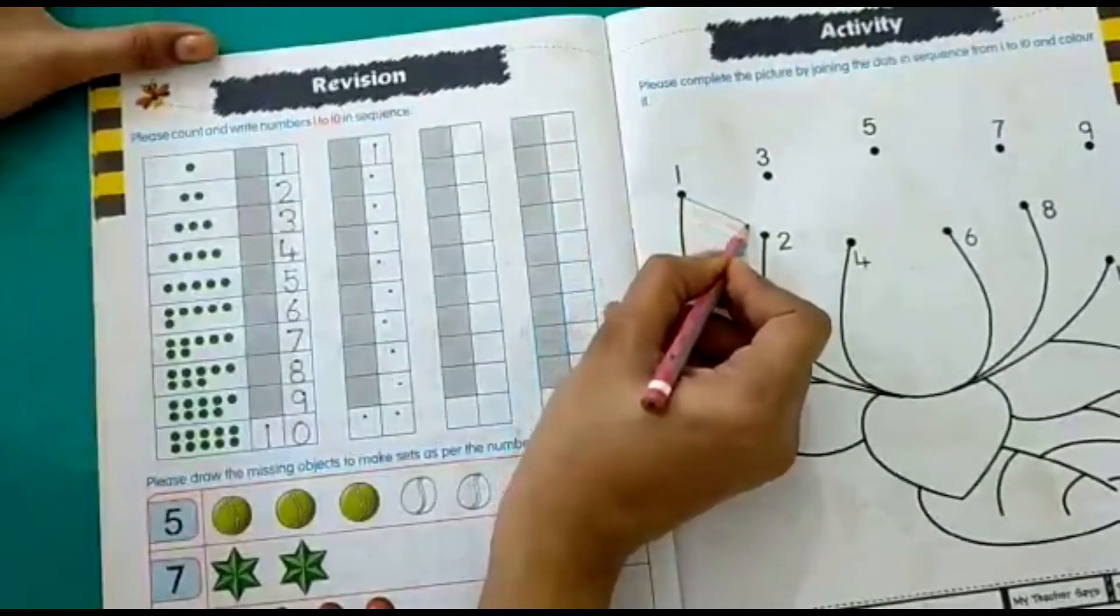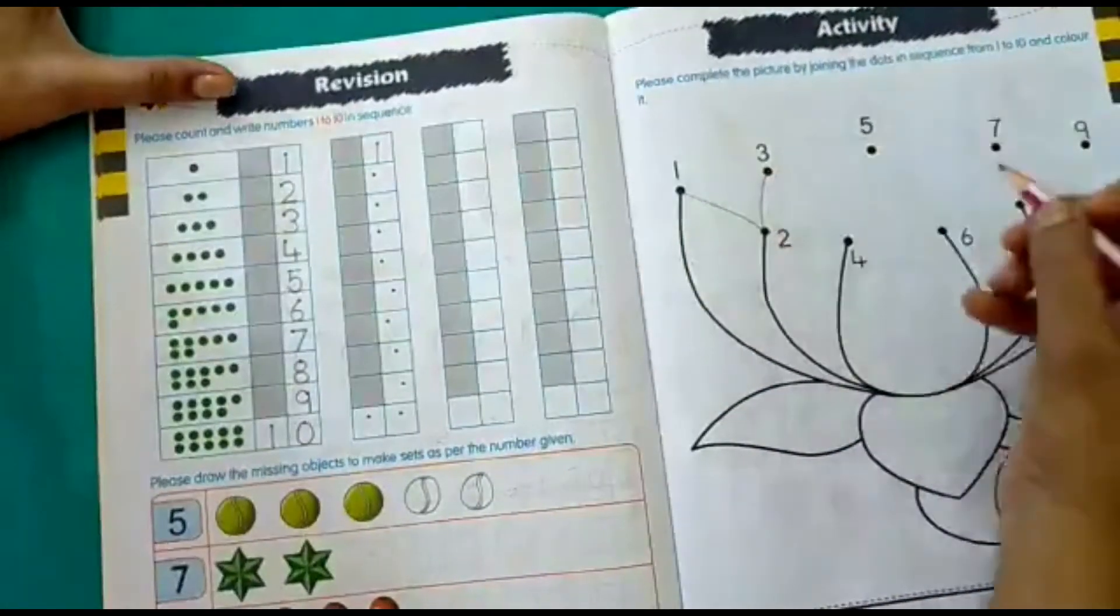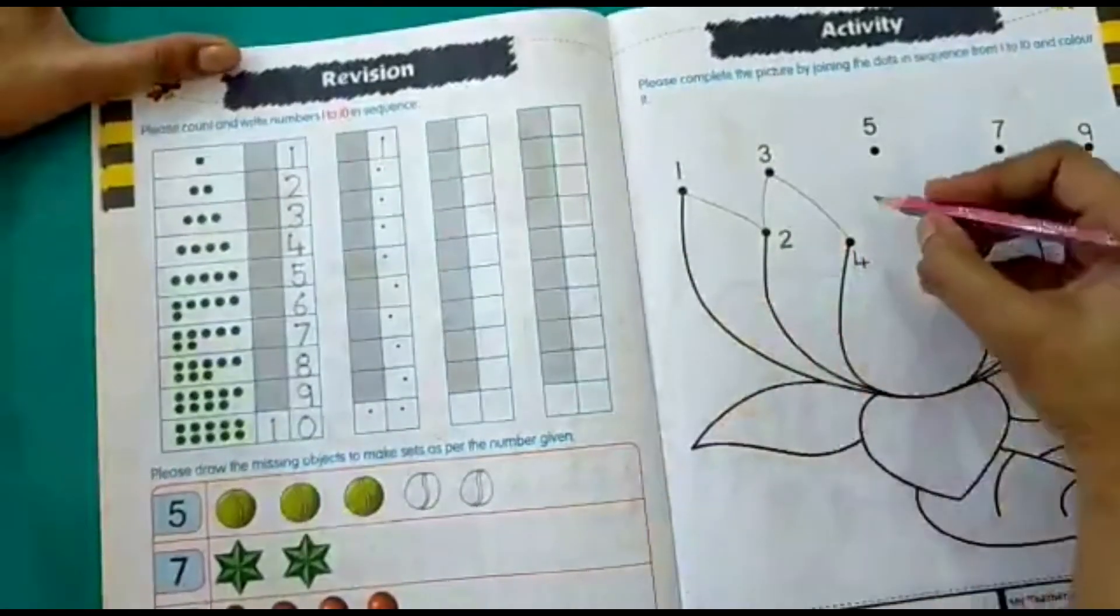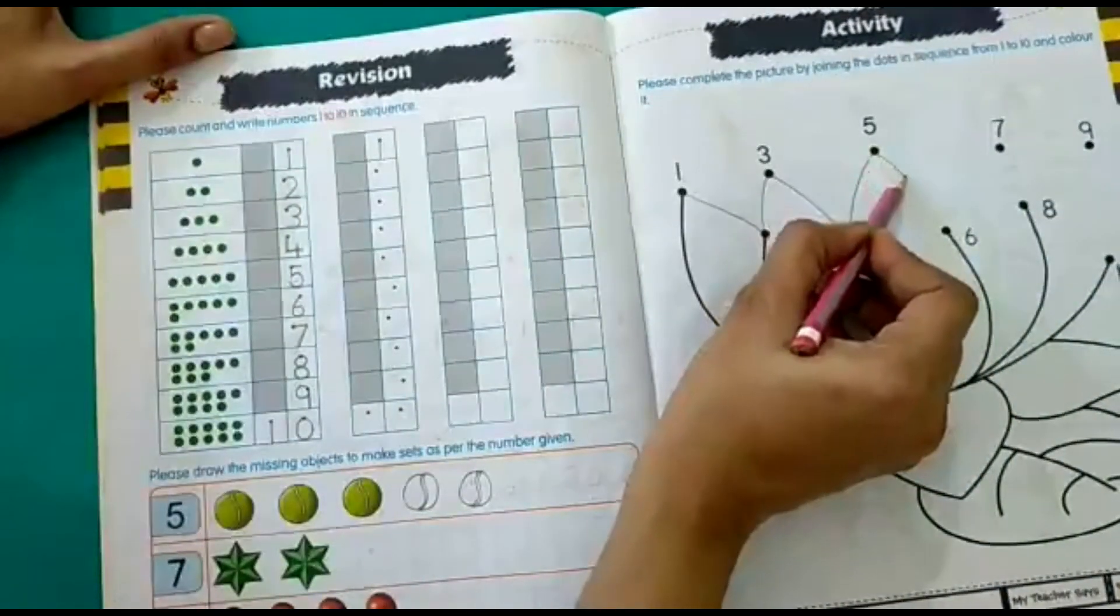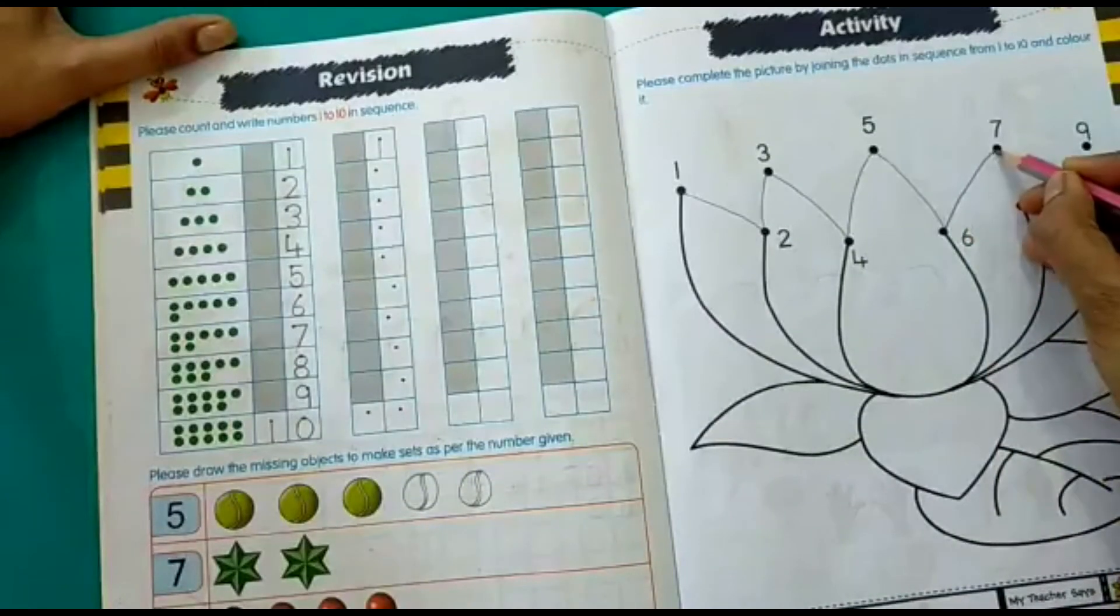From 1 to 2. From 2 to 3. Then from 3 to 4. From 4 to 5. From 5 to 6. From 6 to 7.